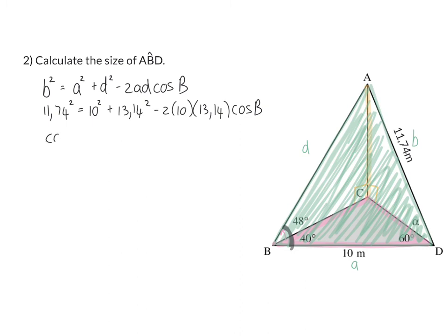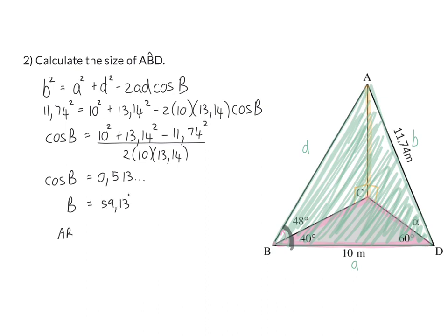And next, we'll get cos B alone on one side. The right-hand side can then be calculated, and you will get 0.513, and you'll keep that complete answer on your calculator, so that you can use it to calculate angle B. And this means that angle ABD is then 59.13 degrees.